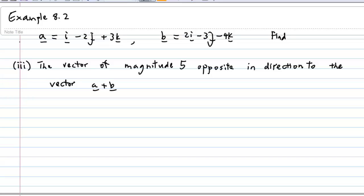We are given a equal to i minus 2j plus 3k, b equal to 2i minus 3j minus 4k. Find the vector of magnitude 5 opposite in direction to the vector a plus b.